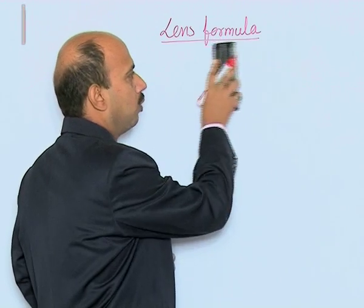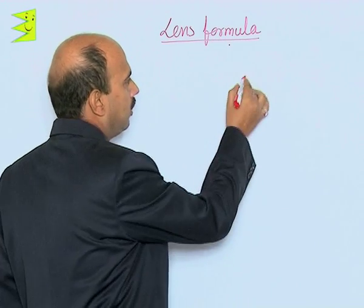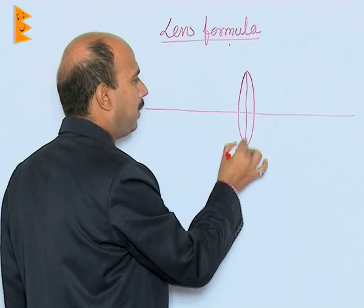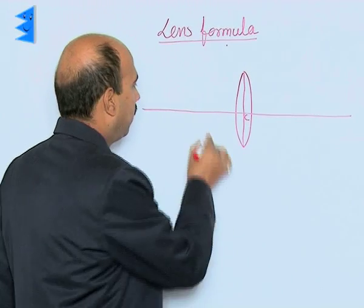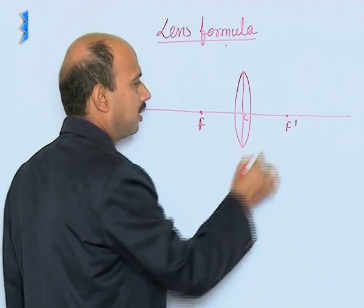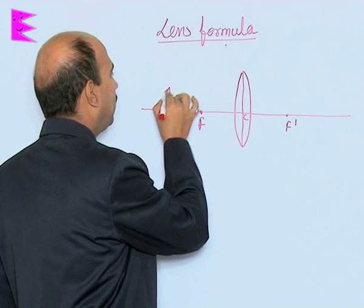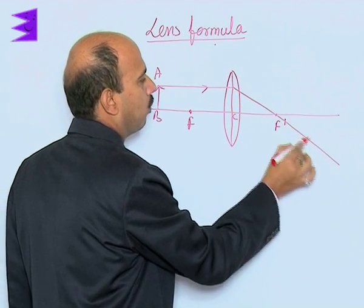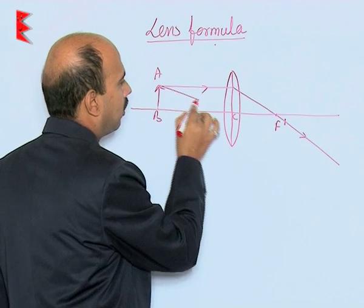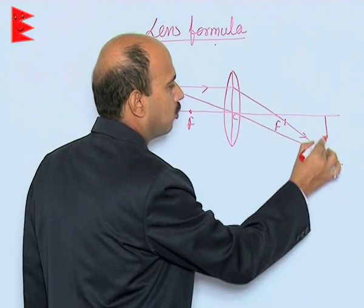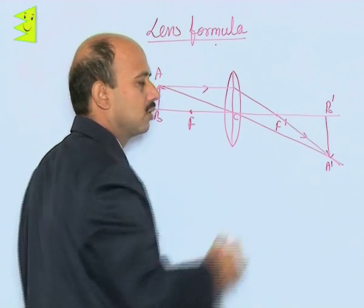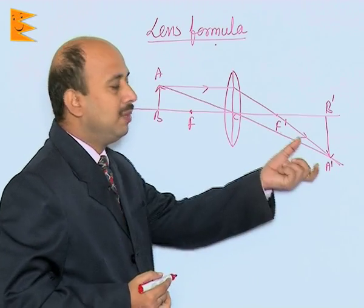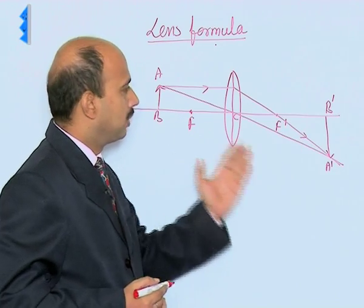Let us take first the convex lens. Here we can take — suppose this is a convex lens of certain focal length. This is a thin lens, this is optical center C, here is F and here is also F'. The object is placed over here — suppose that is A and B. One ray is parallel to the principal axis; after refraction it passes through the focus. Another ray is passing through the optical center, meeting at this point, and the image is A' and B'.